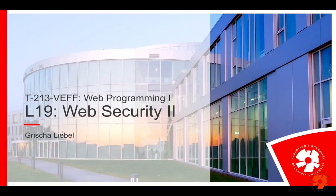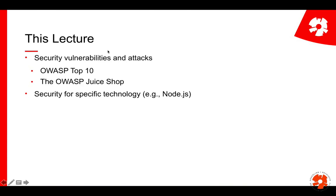Welcome to lecture 19, the second part of web security. We'll now go into what most people think about when we talk web security — vulnerabilities, attacks and the like. We will look in particular at the OWASP top 10, which is one classification of the most important vulnerabilities. In the in-class sessions, I will show you in practice some of these attacks in the OWASP juice shop, an application that has been programmed intentionally vulnerable so that you can train security.